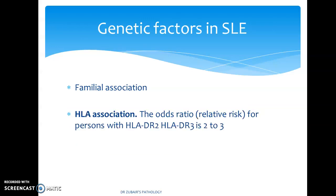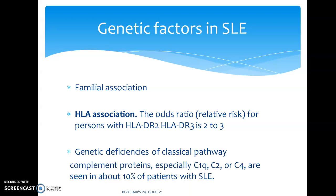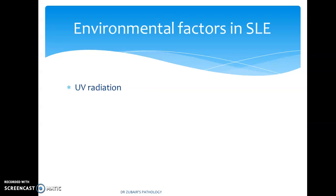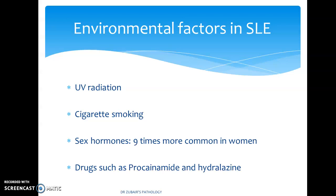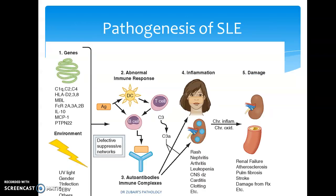There are genetic factors in SLE, including familial association. The odds ratio for persons with HLA-DR2 or DR3 is 2 to 3. There is also genetic deficiency of the classical pathway of complements, especially C1Q, C2, and C4, in about 10% of patients with SLE. UV radiation and cigarette smoking are environmental factors, along with sex hormones — it is 9 times more common in women. Drugs such as procainamide and hydralazine can lead to SLE. Genetic abnormalities combined with UV radiation lead to a defective suppressive network, causing abnormal immune response, autoantibody-immune complexes targeting malar areas of the face, lupus nephritis, and blood vessel damage.